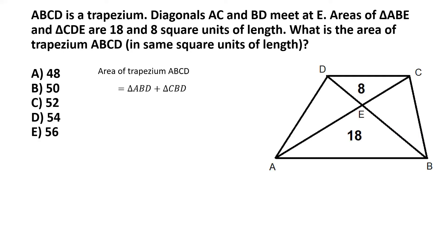For triangle ABD we draw its altitude, indicated by the orange line. We also draw an altitude for triangle CBD, dropping a perpendicular from B to DC, extending the base slightly so the perpendicular meets it. Since AB and DC are parallel, these two altitudes are equal. We call each of them h.